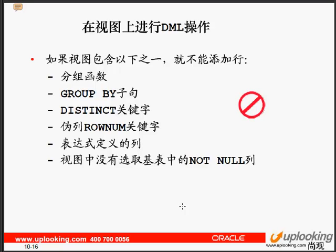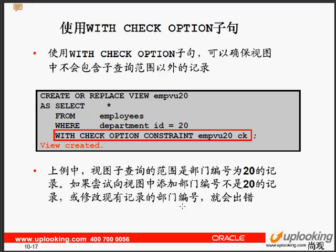INSERT 操作在 UPDATE 的条件基础上，再多一个限制：NOT NULL 约束的列没有在基表的 SELECT 语句中出现。如果基表中存在 NOT NULL 的列，但视图的 SELECT 语句中没有包括该列，那么对视图进行 INSERT 操作就会报错。这就是我们说的三种 DML 操作限制的条件。